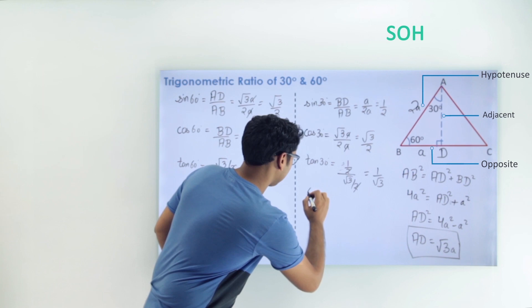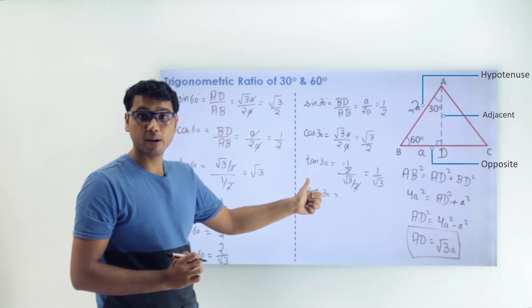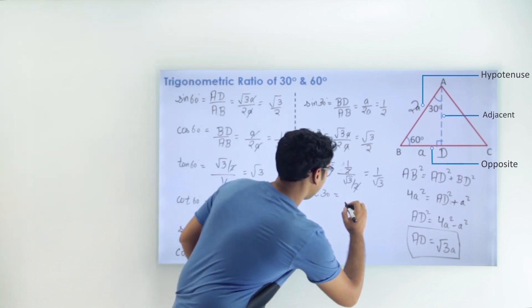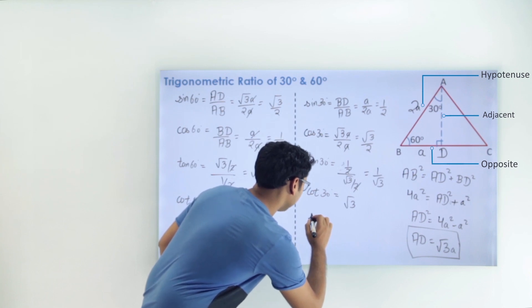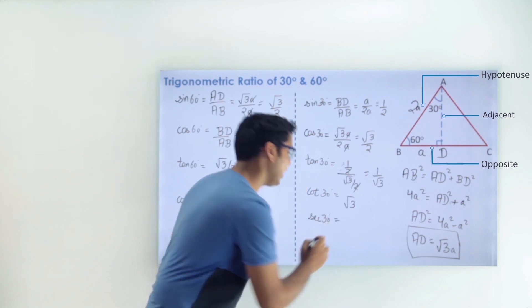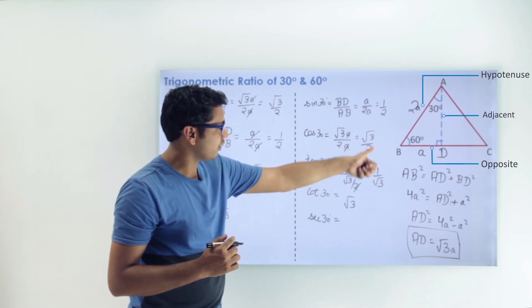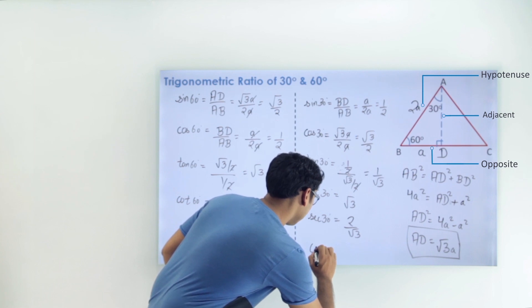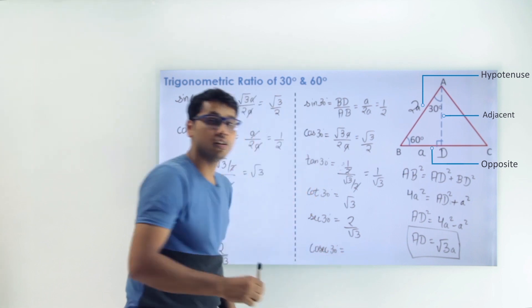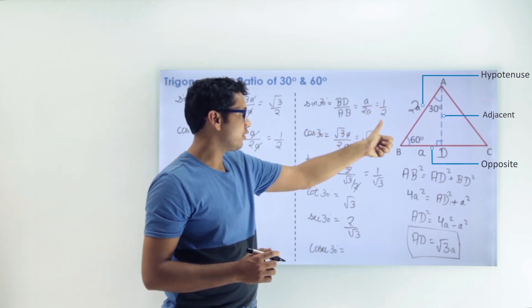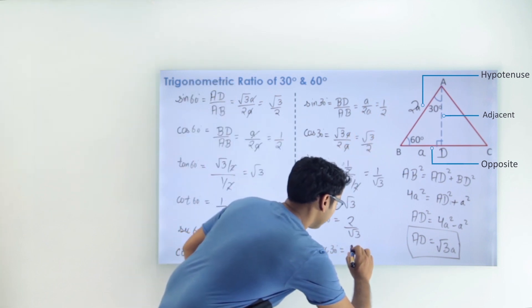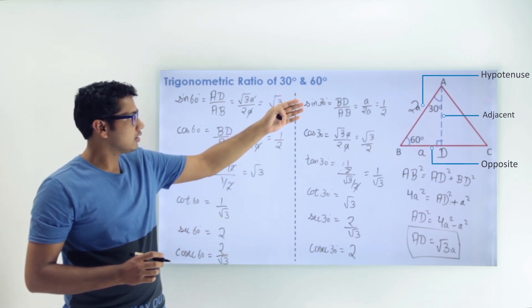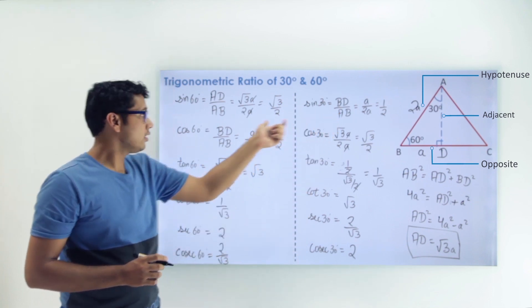cot 30° = 1/tan 30° = reciprocal of 1/√3 = √3. sec 30° = reciprocal of cos 30° = reciprocal of √3/2 = 2/√3. cosec 30° = reciprocal of sin 30° = reciprocal of 1/2 = 2.